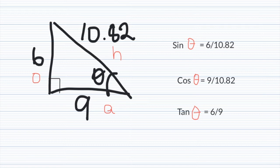Let's look at another triangle where the sides are 6, 9, and 10.82. In this case, we'll use the first angle as being θ, which is the lower left-hand corner. The right angle is shown by the square in the left-hand corner.